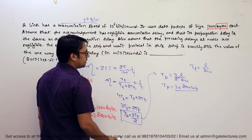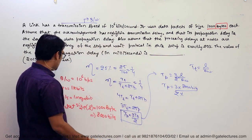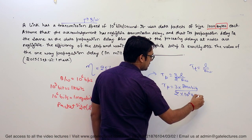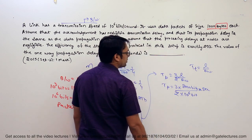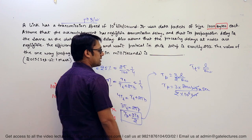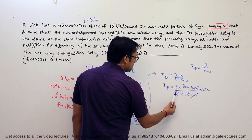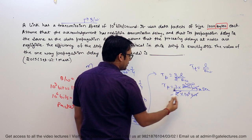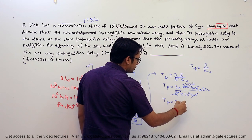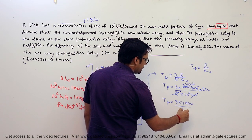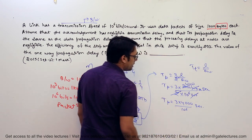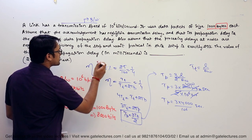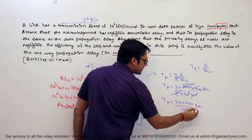Substituting: tp = (3/2) × (8000 bits) / (10^6 bits per second). Cancelling the 8000 with 2 gives 4000, so tp = (3 × 4000) / 10^6 seconds. Now, the question asks for the answer in milliseconds, but we currently have the answer in seconds.